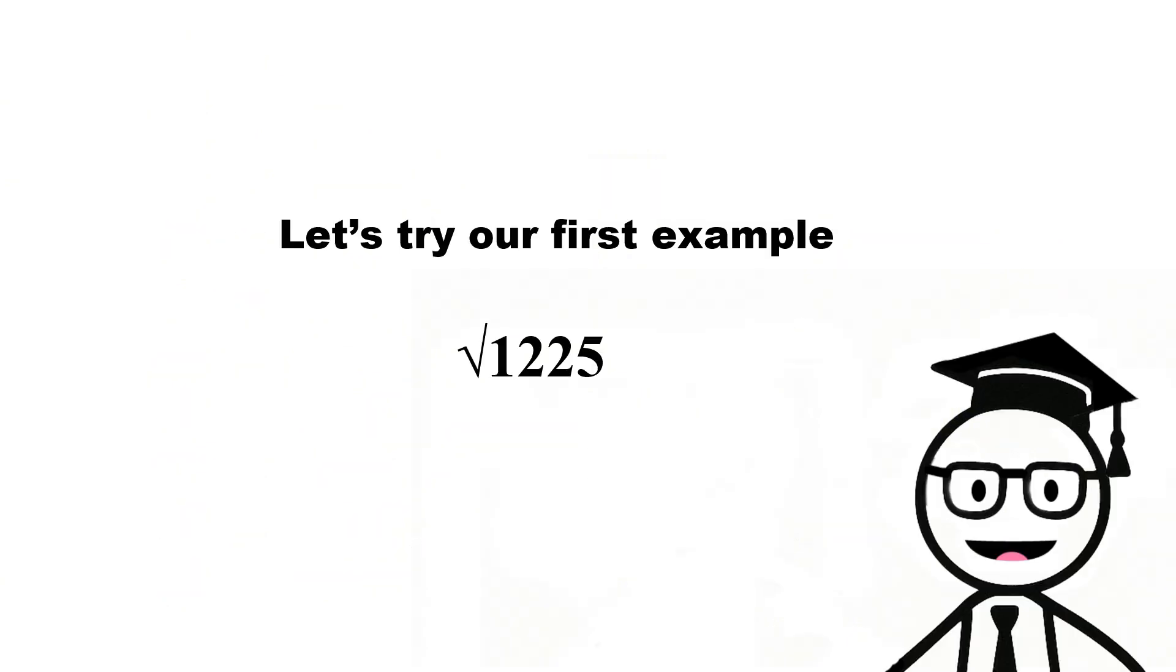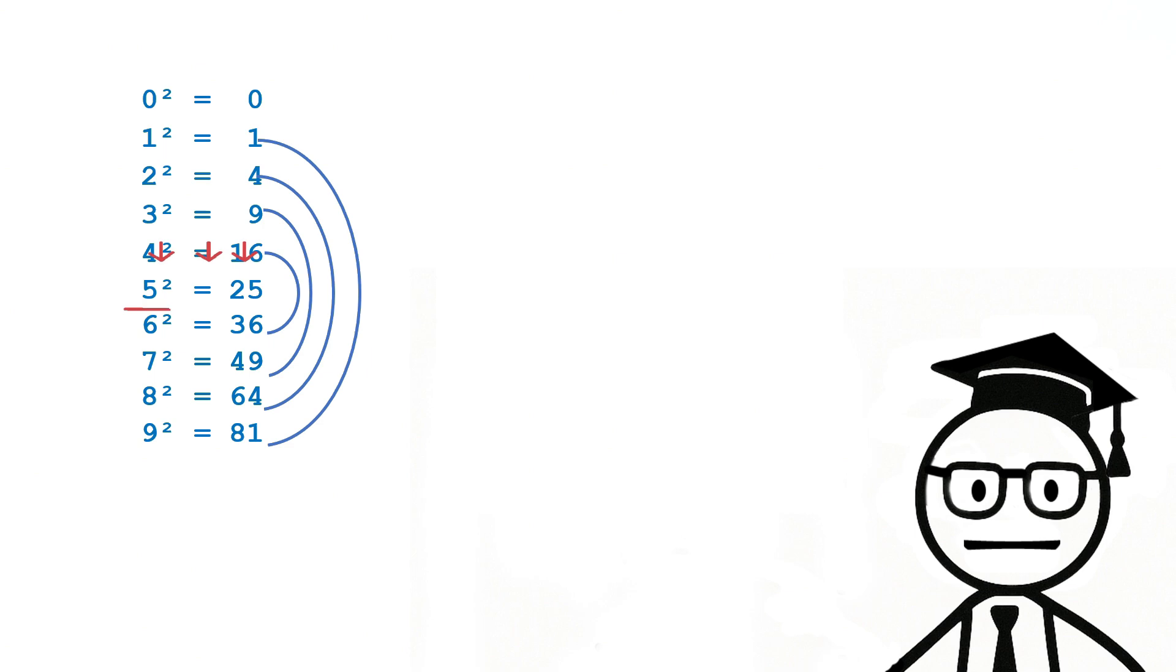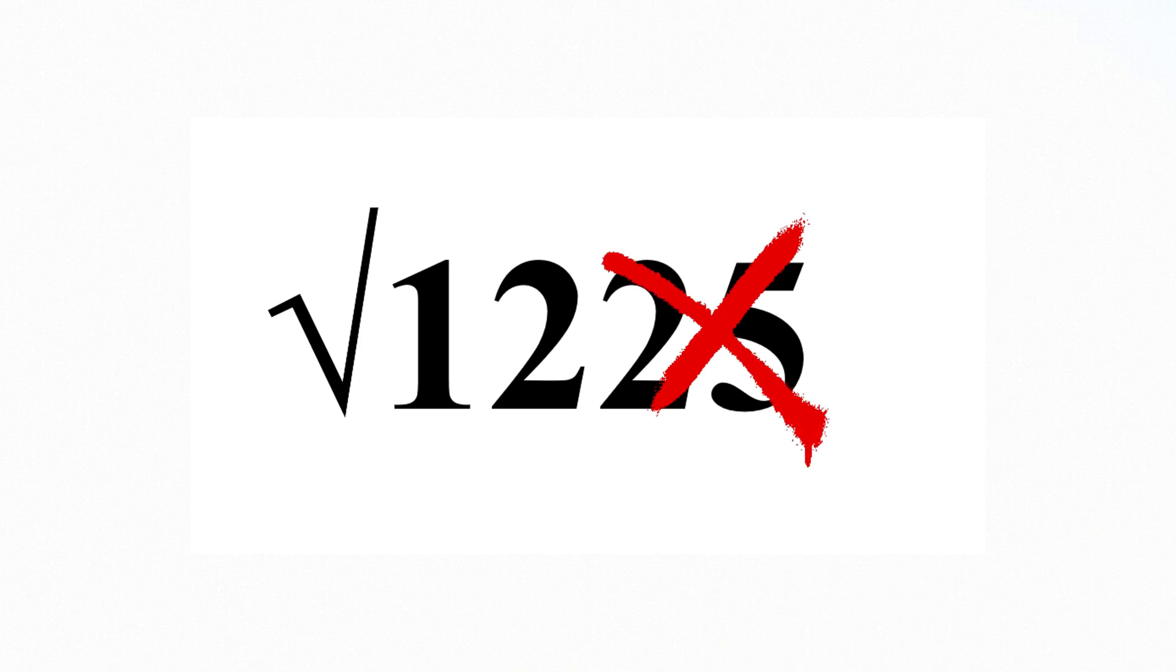Let's go for a test run. What's the square root of 1225? Which number squared ends in 5? Only 5 squared equals 25. Boom. So our answer must end in 5. You can scratch out the last two digits now.